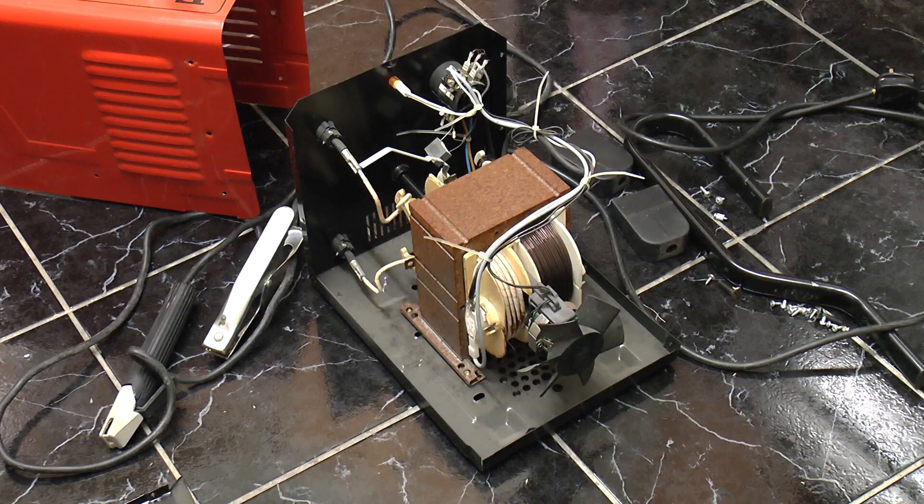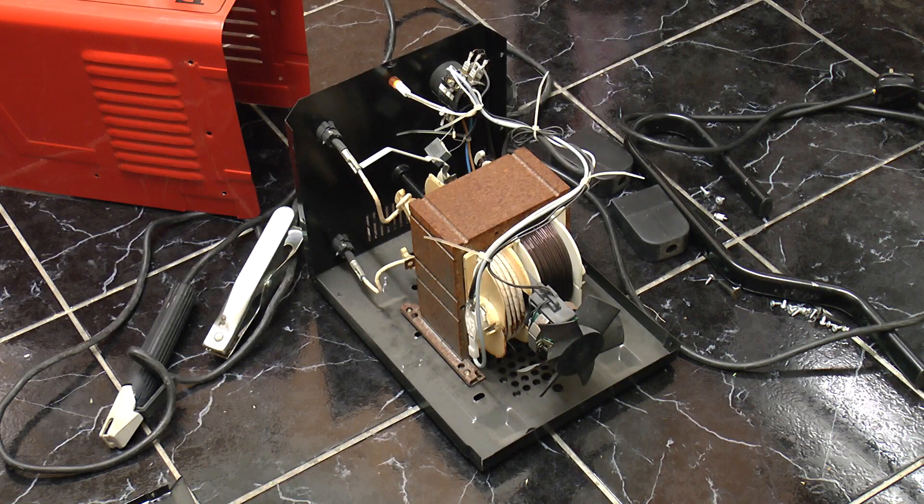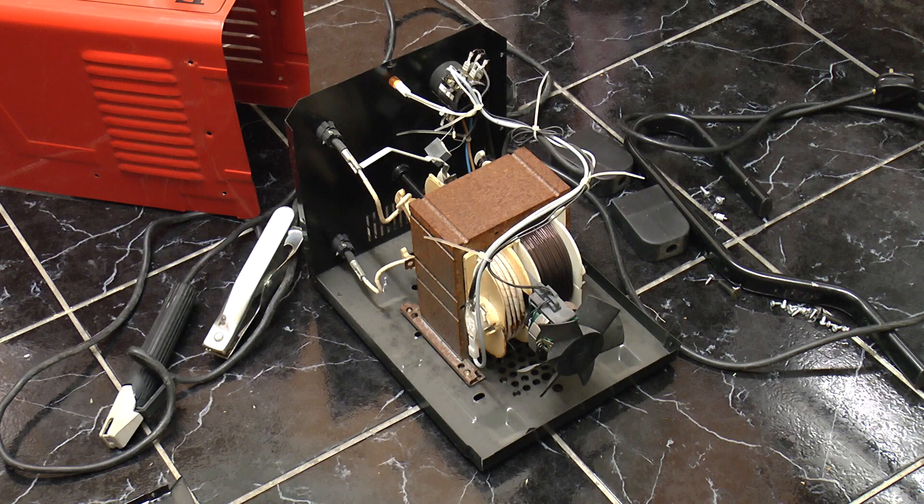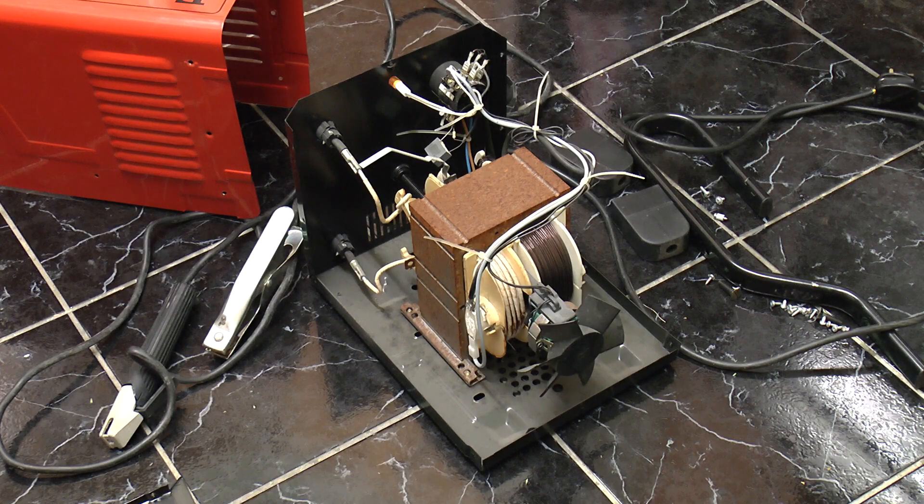So now you know what's inside an arc welder. Basically a big transformer, a fan, and some strange metal bits that stick into the transformer. Thank you for watching.